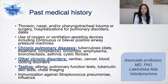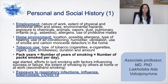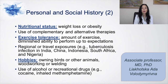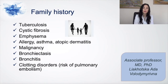During personal and social history, pay attention to employment, home environment, tobacco use — including type of tobacco, duration and amount, and pack-years calculation — and exposure to respiratory infections such as influenza, tuberculosis, and, of course nowadays, COVID-19. Also ask about nutritional status, use of therapy, exercise tolerance, hobbies, use of alcohol, and recreational drugs. For family history, the relevant conditions include tuberculosis, cystic fibrosis, emphysema, bronchiectasis, malignancies, allergies, asthma, atopic dermatitis, bronchitis, and clotting disorders, which are a risk for pulmonary embolism.